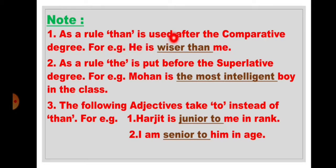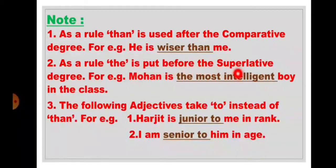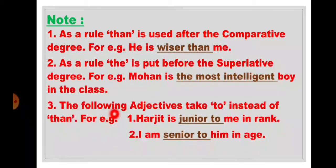Additional rules: First, than is used after the comparative degree. For example: he is wiser than me — after the comparative degree wiser, we use than. Second, the is put before the superlative degree. For example: Mohan is the most intelligent boy in the class — before most intelligent, we use the word the. Third, the following adjectives take to instead of than. For example: Harjit is junior to me in rank. I am senior to him in age.